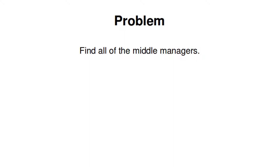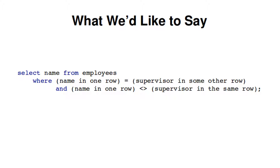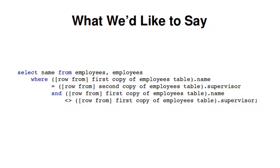It's even possible to join a table with itself. This lets us answer more complex questions like: which employees are middle managers — that is, they supervise others and are also supervised by a different person? We want everyone who is somebody's supervisor and who isn't their own supervisor. We get stuck writing this without a join, but if we join employees with itself, we get every permutation of two rows including identical rows, which lets us write it out using 'employees, employees' in the FROM statement.